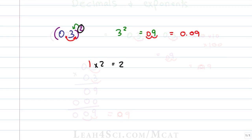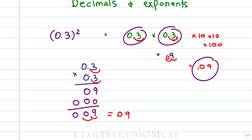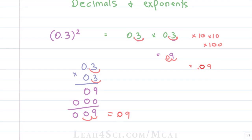Notice that this is exactly what we did the long way — we moved it twice to the right and then un-moved it by moving it twice to the left, but without actually taking the time to write it all out. This trick saves you even more time when the numbers are more complex.